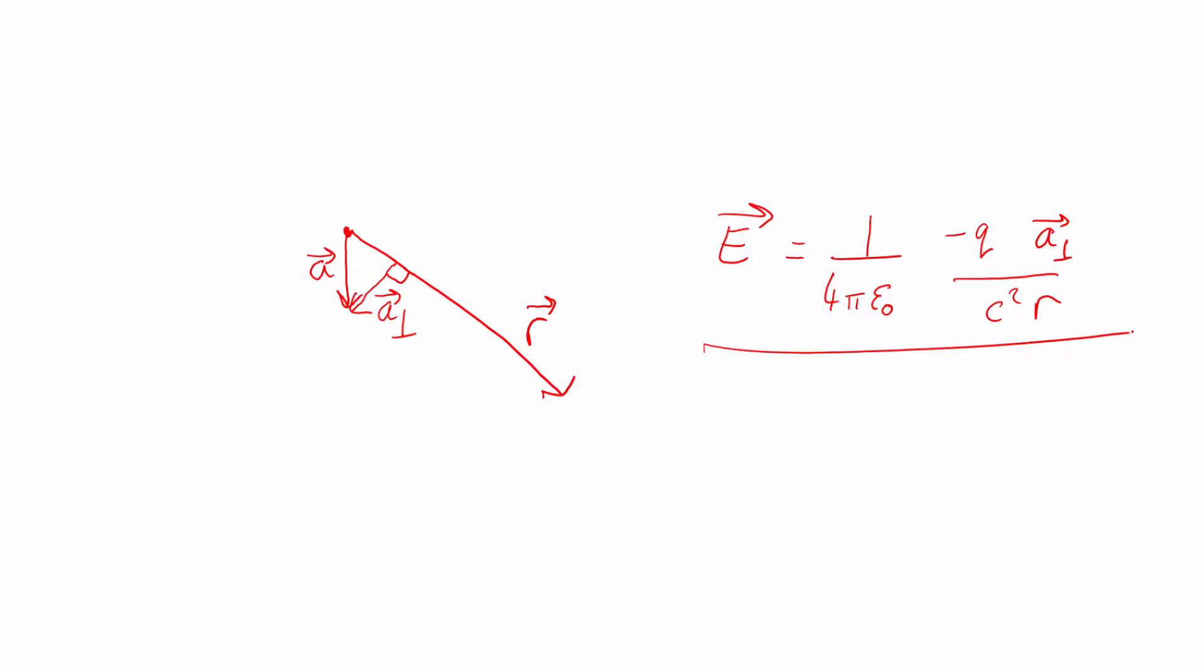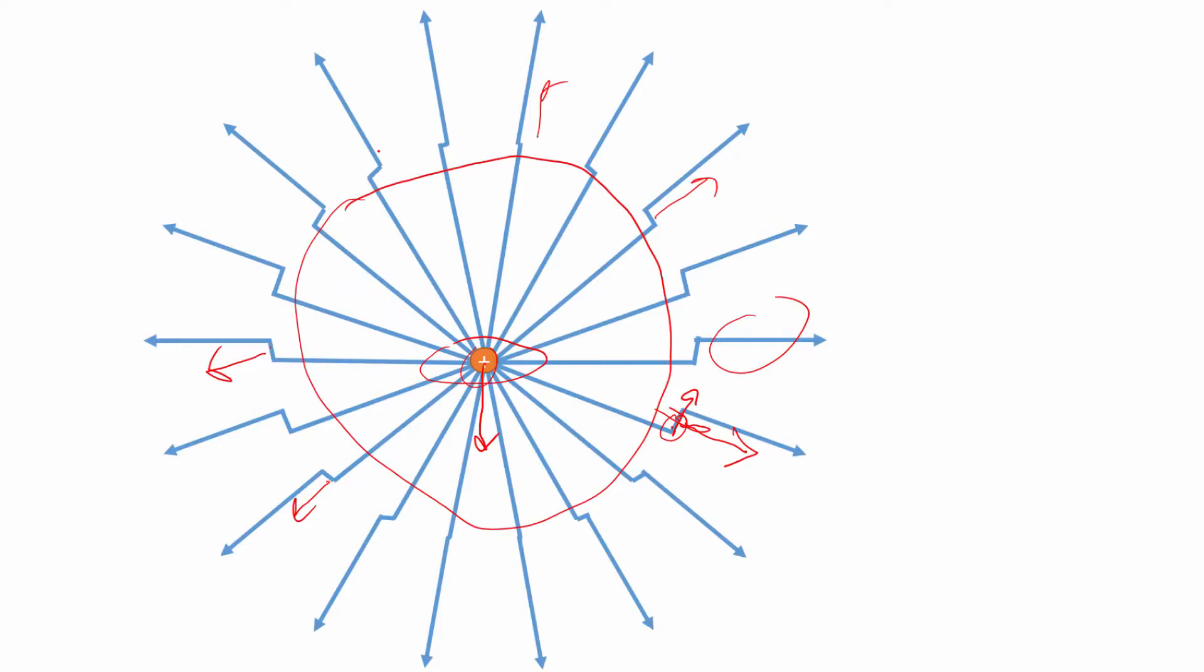So what's that telling us? You can get the strongest field when you go out sideways, because then a perpendicular will be the same as a. When you're going along the direction of acceleration or right angles to it, a perpendicular will have no size. And if you go back here, you can see that's what's going on. You have large kinks going out sideways, and very small kinks going at the top and the bottom. So when you accelerate something, you send out radiation mostly around the equators, at right angles to its acceleration, and less and less along and behind the direction.